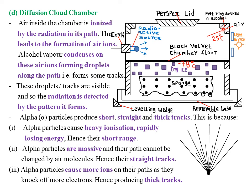Another component of the upper compartment is called the felt ring soaked in alcohol. The purpose of alcohol in the upper compartment is simply to produce alcohol vapor which condenses on air ions to show trails of radiation path, or what we call the tracks. The purpose of alcohol is to give us the alcohol vapor, because in some cases we can also use water vapor.